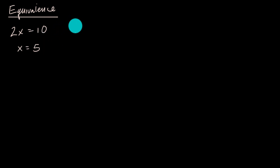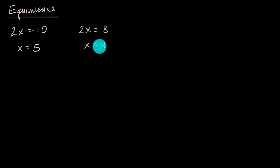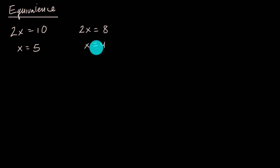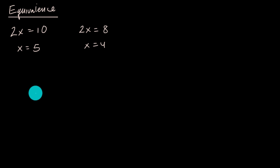Another set of equivalent equations: 2x equals 8 and x equals 4. An x satisfies one if and only if it satisfies the other. In this video, we're going to extend our knowledge of equivalence to thinking about equivalent systems. When you were solving systems of equations in the past, you were doing operations assuming equivalence, but you might not have been thinking about it that way.